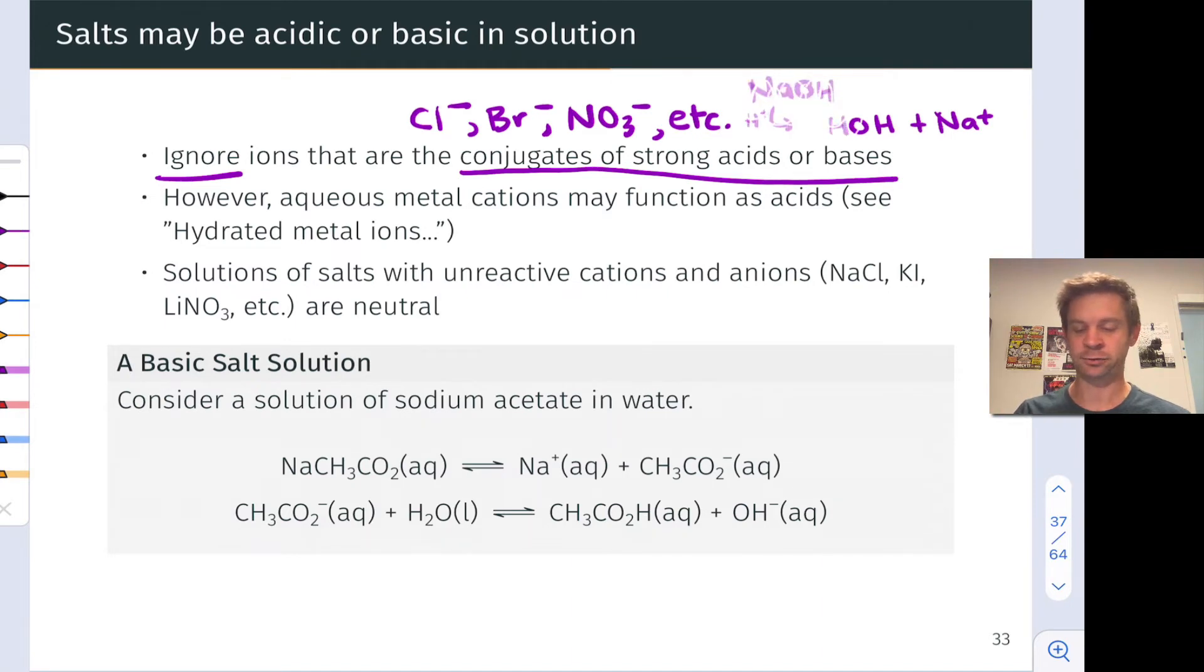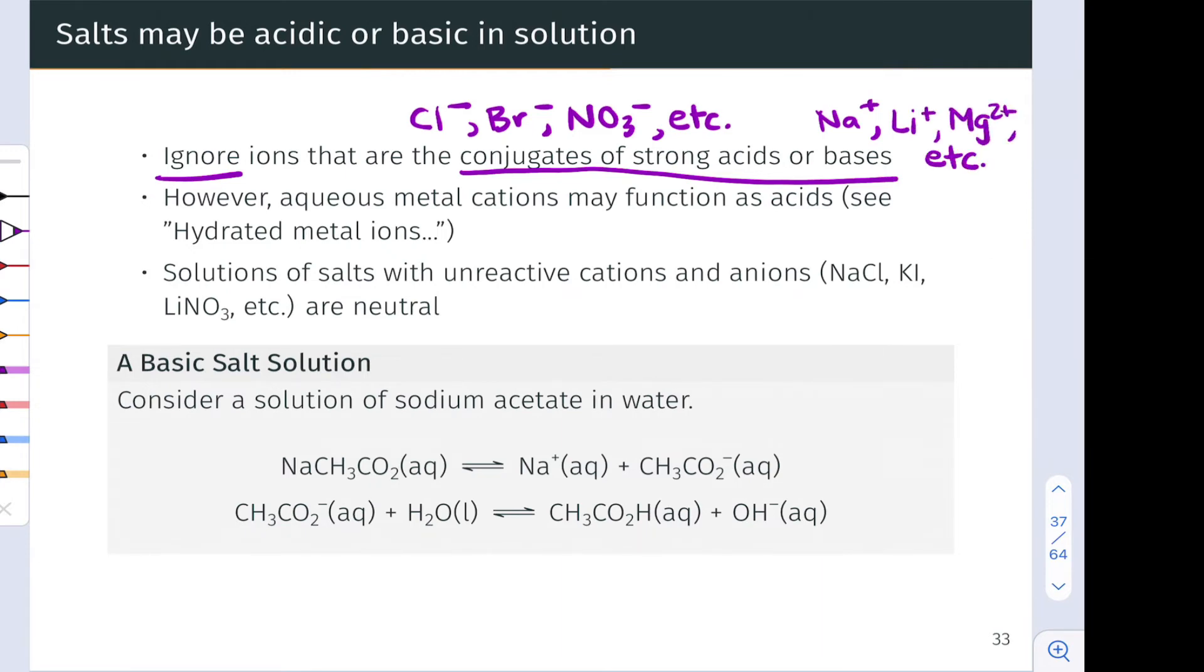This is a very important general idea to keep in mind. The conjugate acids of strong bases that are hydroxide salts are those metal cations that come along for the ride with the hydroxide anions. These are things like Na+, Li+, Mg2+, etc. These cations undergo no appreciable reaction with water to produce hydronium ions, and so effectively we can ignore them.